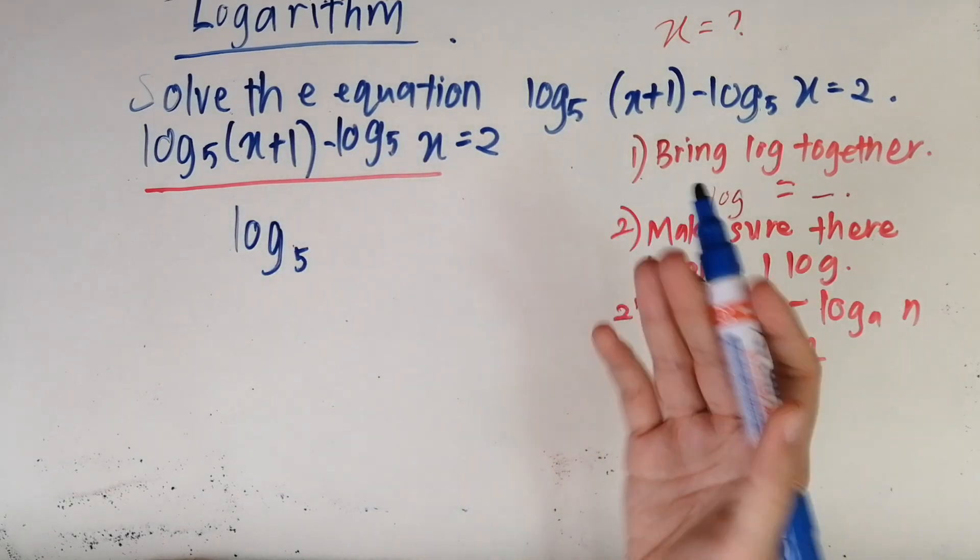All right, so to do this we can refer to the second rule of logarithm, which is log_a(m) minus log_a(n) equals log_a(m/n). Just apply this rule to this question. The one in front will be your numerator and the one behind will be your denominator. So basically your numerator will be x+1 and your denominator will be x.